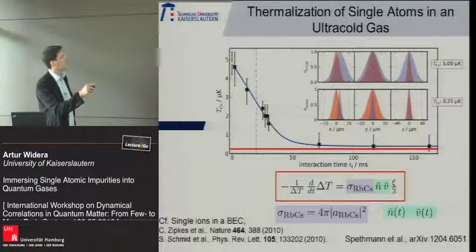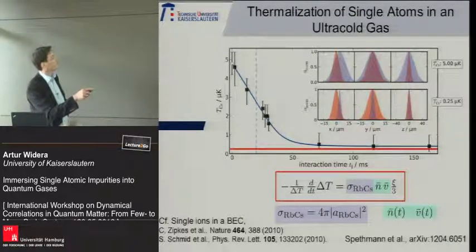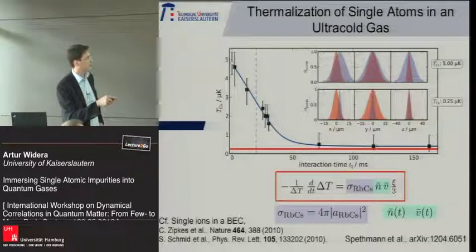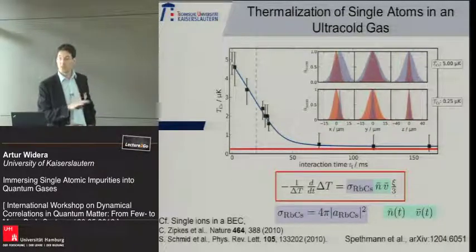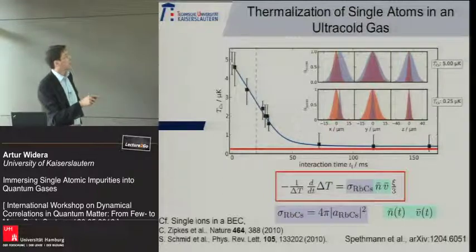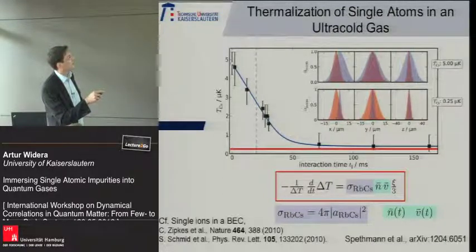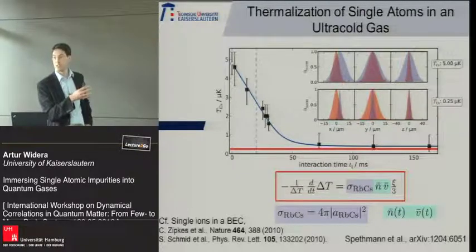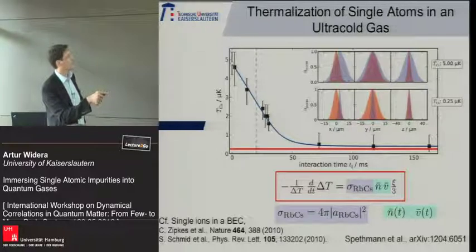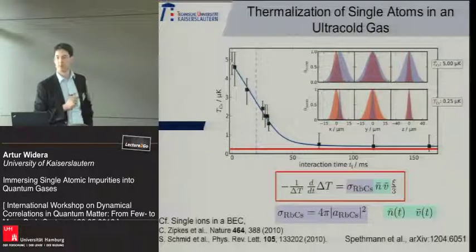We map out the temperature of the cesium atom versus the interaction time, and it decreases, agreeing within our error bars with the temperature of the ultra-cold gas measured by time-of-flight velocimetry of the rubidium gas. These two independently measured temperatures coincide, showing we can use single atoms as temperature probes for another object. An interesting open question is what the energy distribution of the single atoms looks like at these equilibration points — something we have not yet measured but want to investigate.